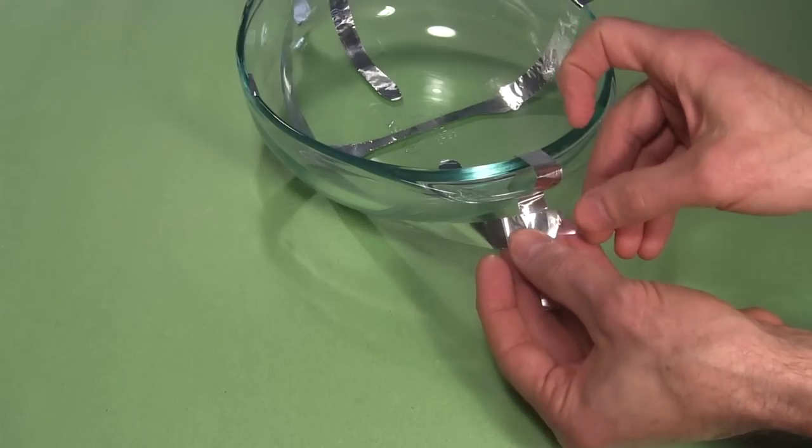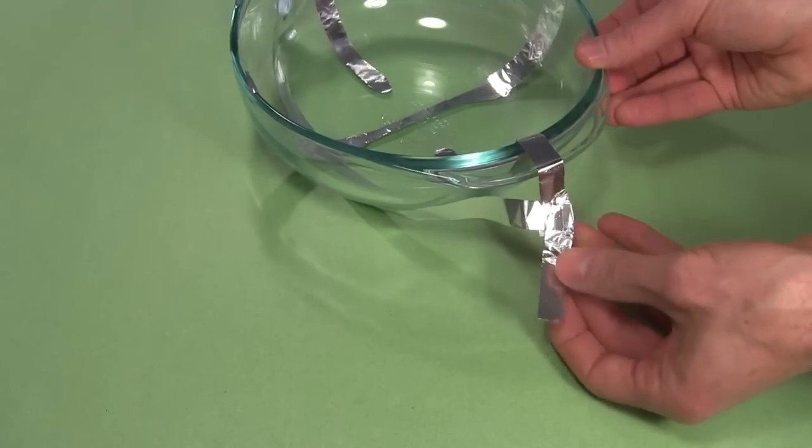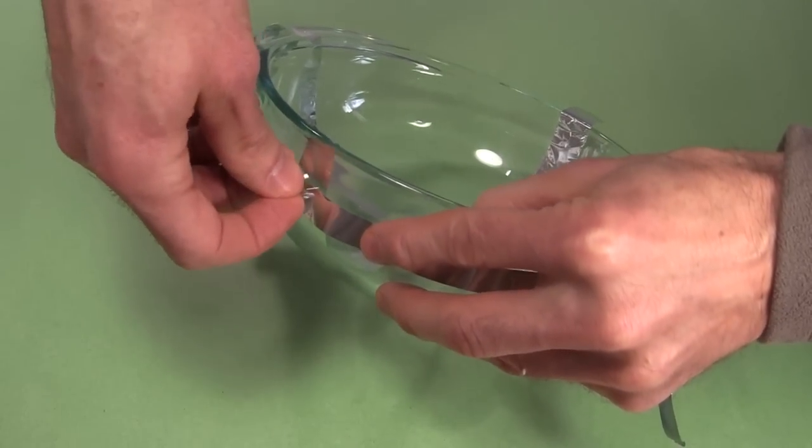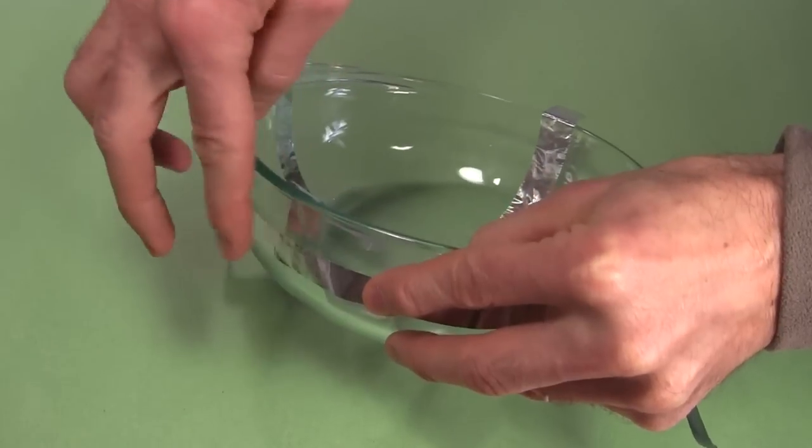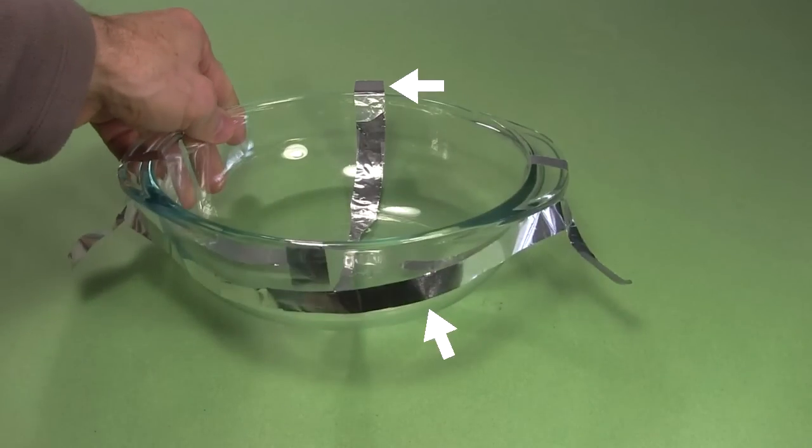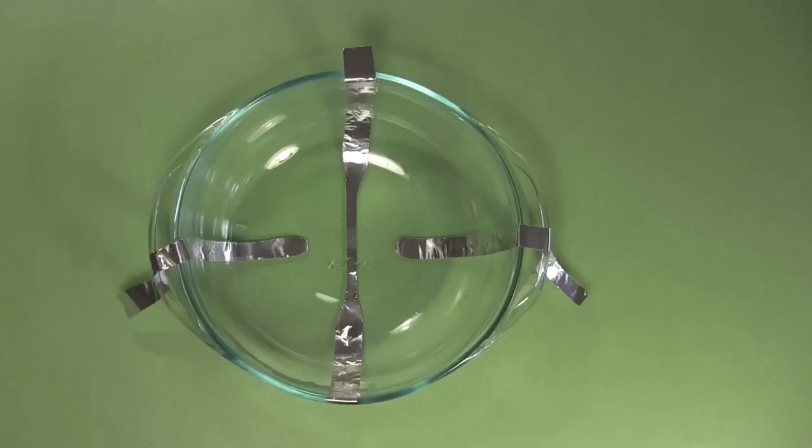tape another strip of foil to both of the ends of the two strips. But make sure you tape both ends such that you have aluminum touching aluminum. To make sure that the strip doesn't touch this one, I tape it down to the side of the bowl. Notice that it's on the opposite side from where the first strip extends past the bowl. Done.